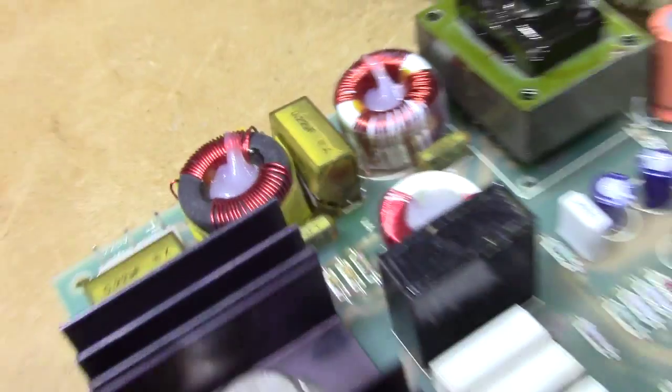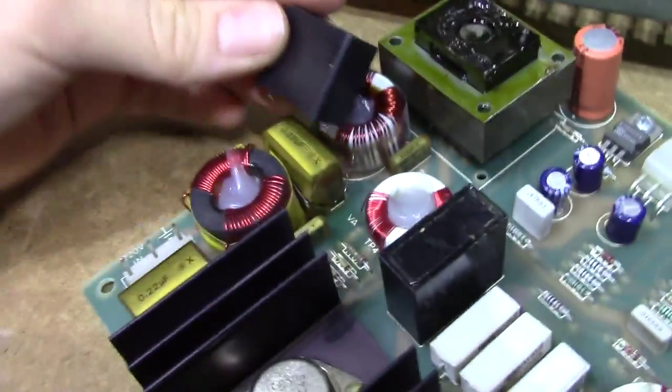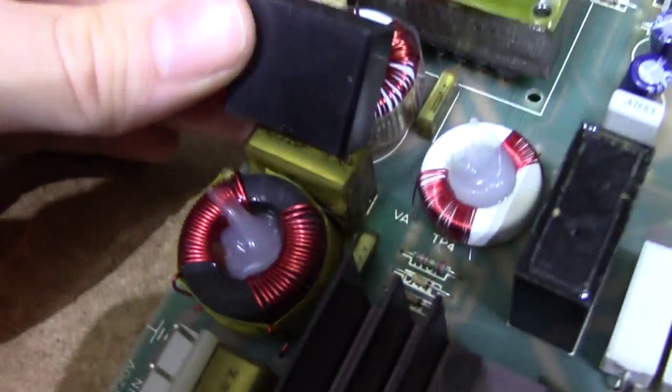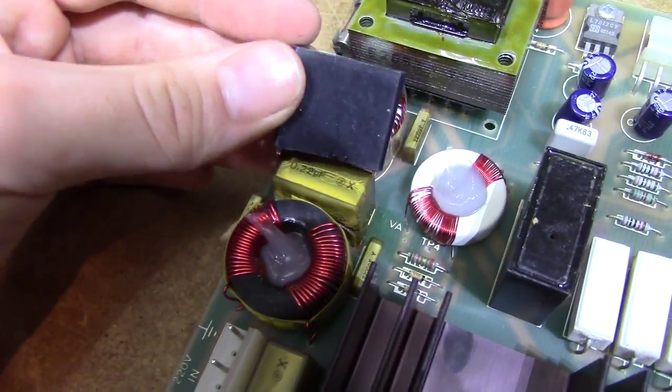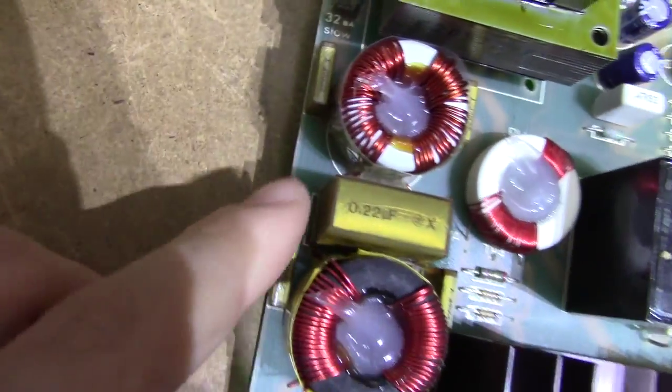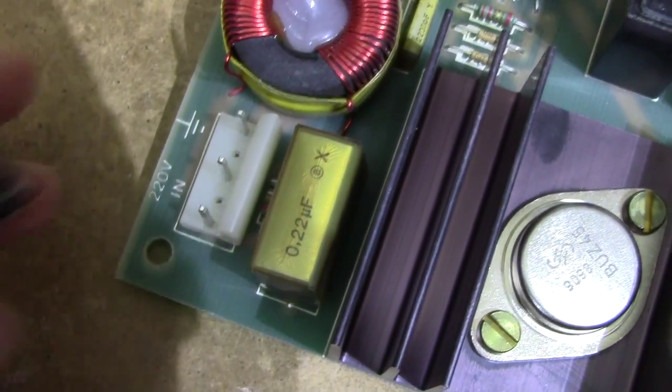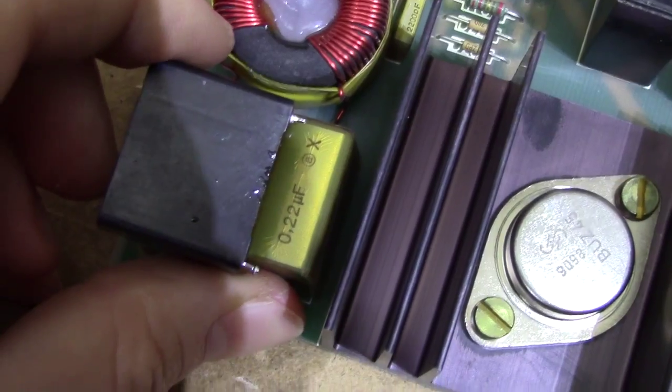That cap's definitely a goner. There's no doubt that's where the smoke came from. I've also got my new-ish late 90s vintage caps which are going to fit just perfectly. They are slightly wider than the originals, but as you can see the board has holes for slightly wider caps for both of them as well. So this is not going to be a problem at all.